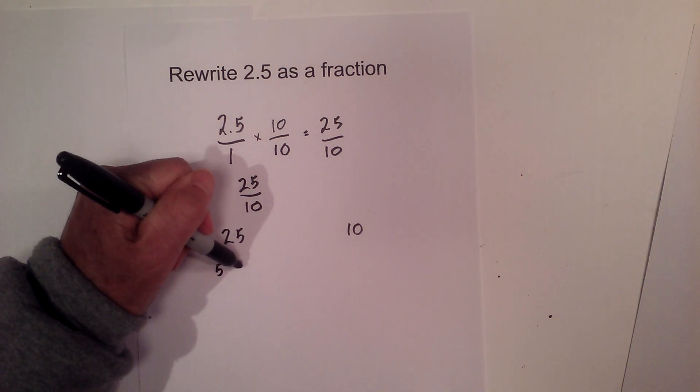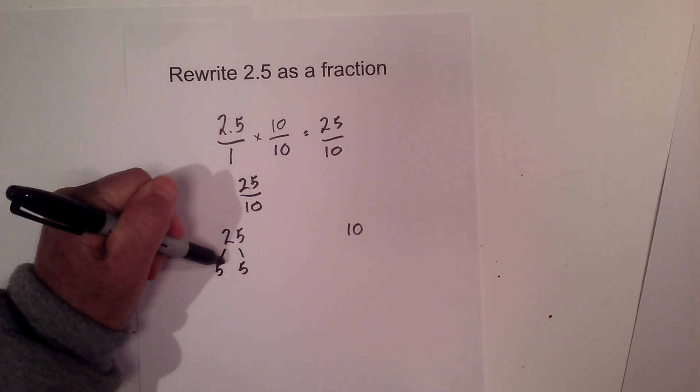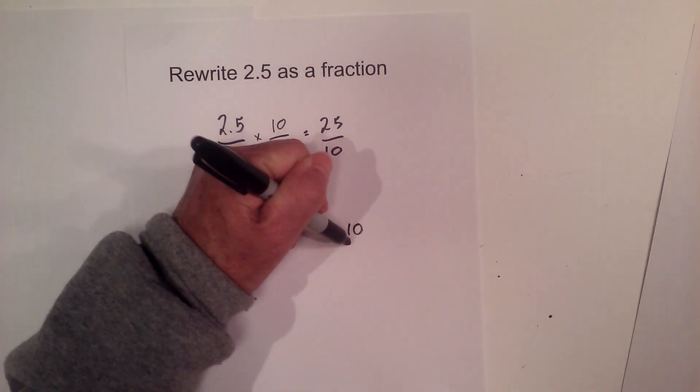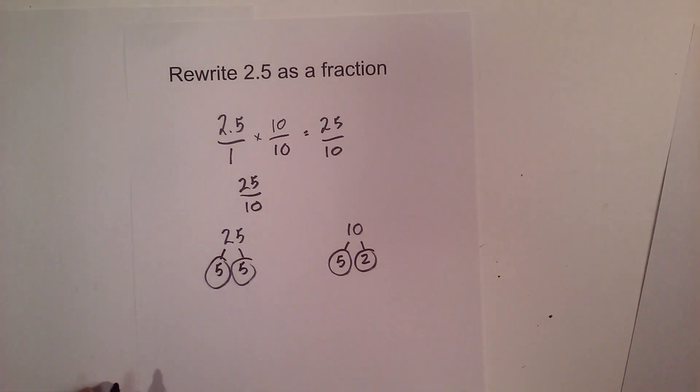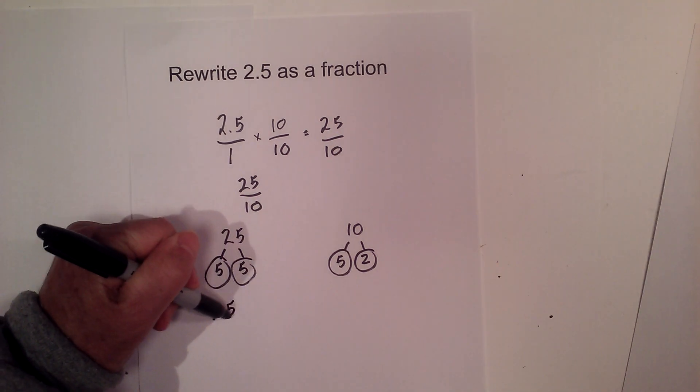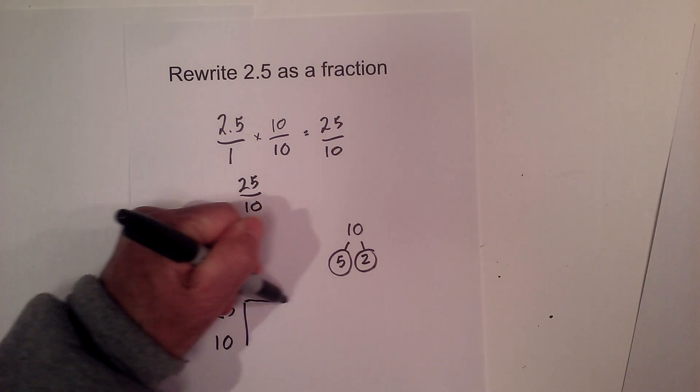We have 5 times 5 is 25. Circle both of these because they're prime and 5 times 2 equals 10 and they're both prime. Now I'm going to write a little chart.